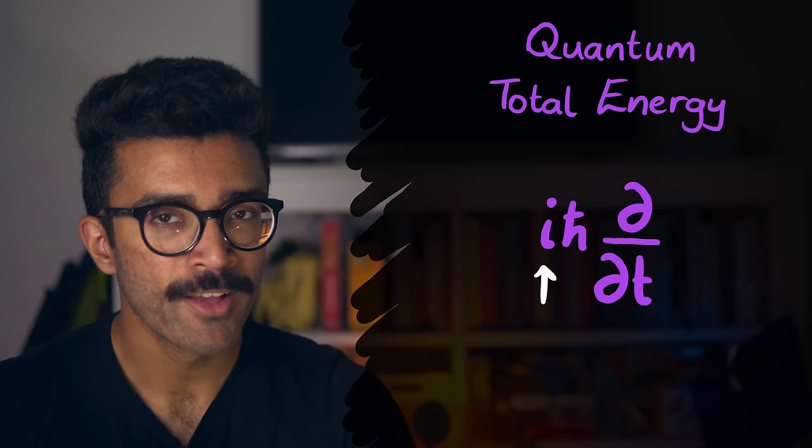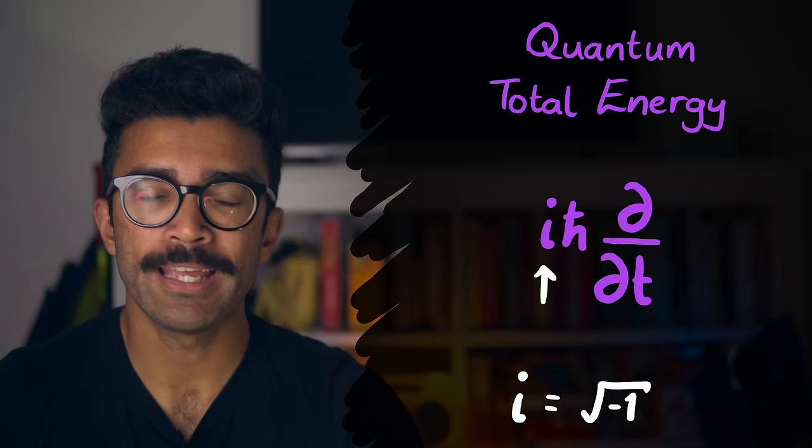And thirdly, maybe most importantly of all, there's this i here. The i represents the imaginary number, or the square root of negative one. What the heck? It looks like energy in quantum mechanics is imaginary. Or is it?